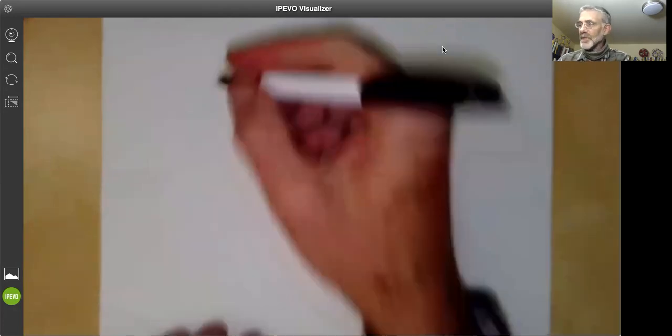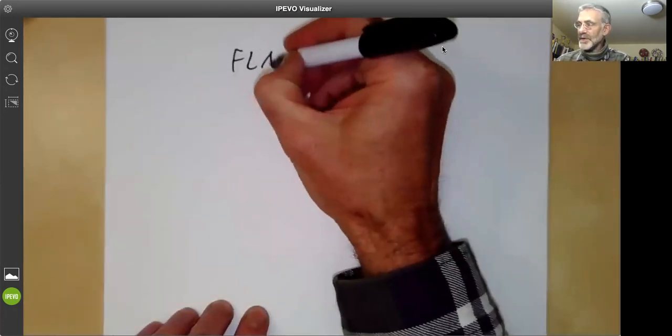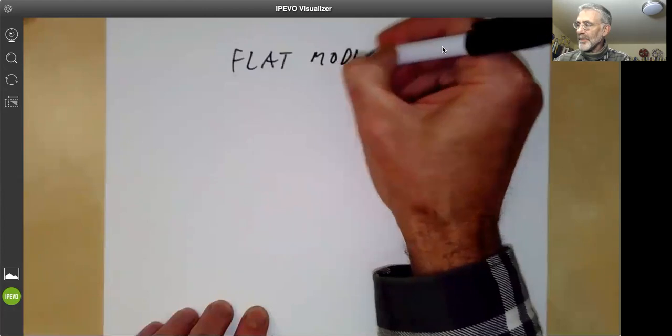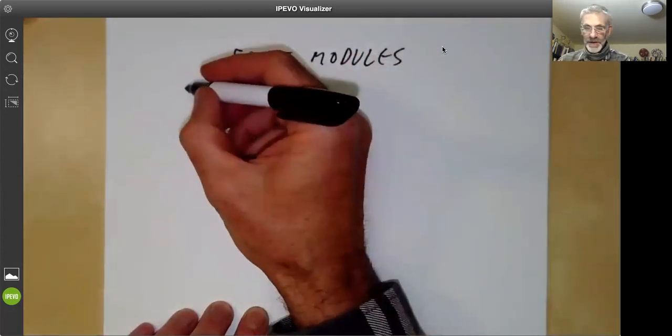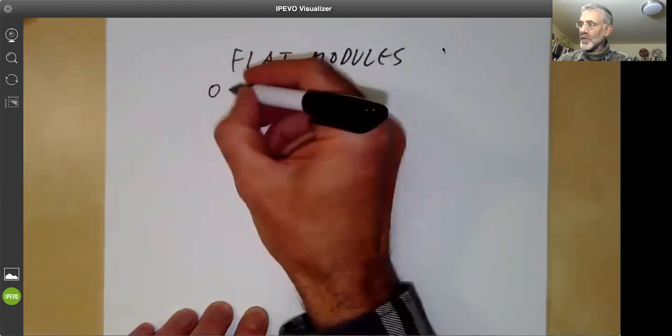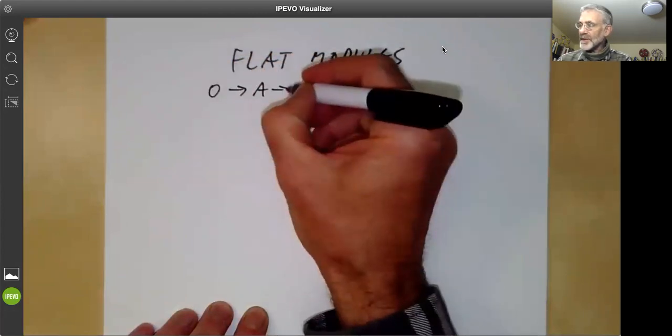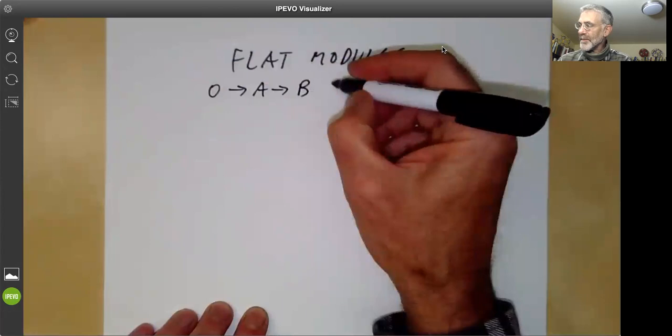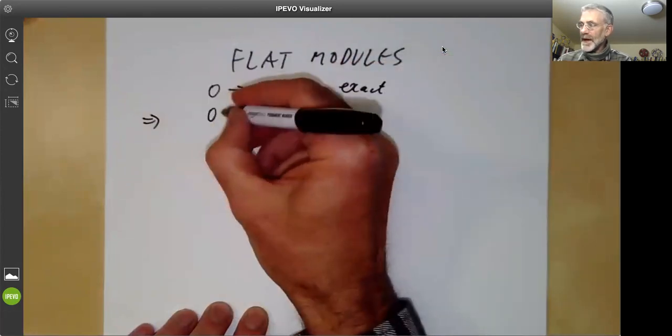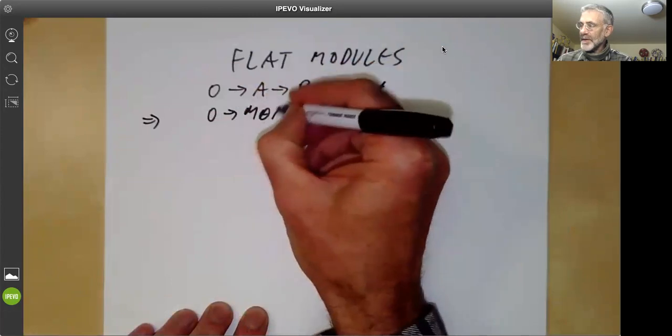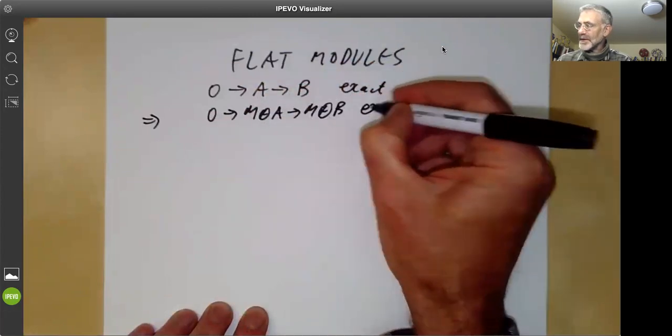This lecture is part of an online commutative algebra course and will be about flat modules. We just recall the definition, so the definition says that m is flat if 0 goes to a goes to b being exact implies that 0 goes to m tensor a goes to m tensor b exact.